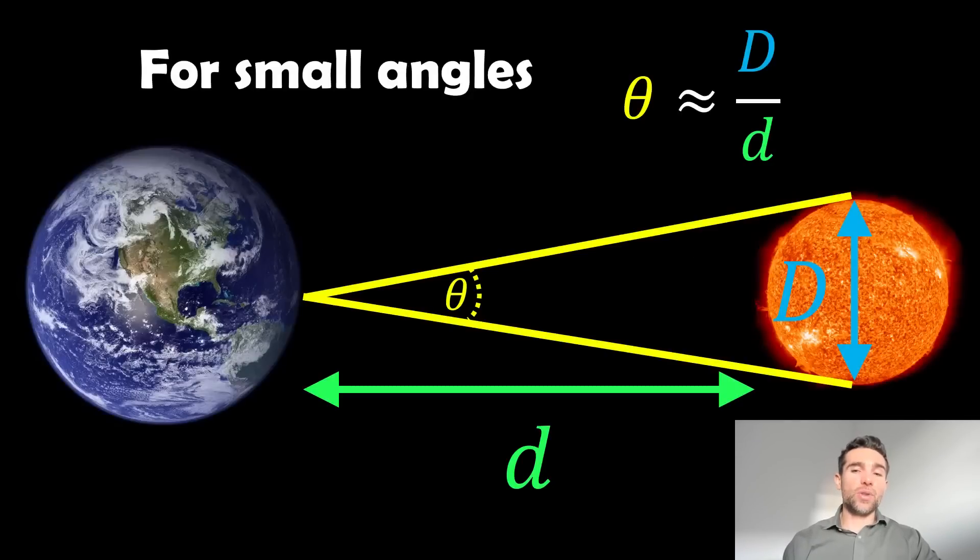For small angles we can use this approximation. Theta, our angular diameter, is approximately equal to the diameter of the Sun divided by the distance, and then we can essentially get the diameter. If we rearrange that for the diameter of the Sun, we can calculate that relatively straightforward.